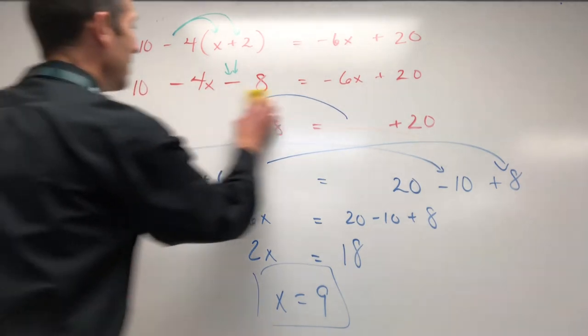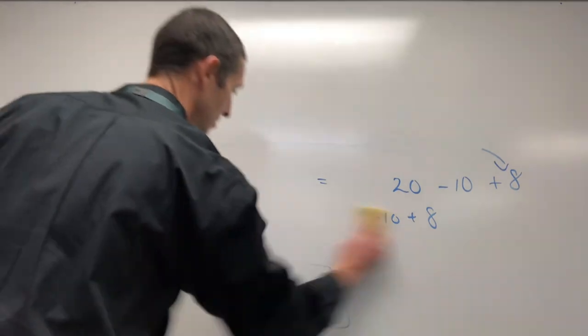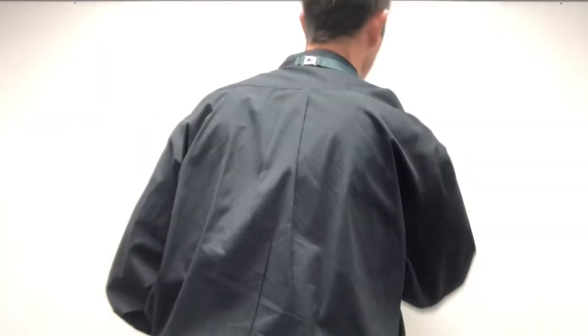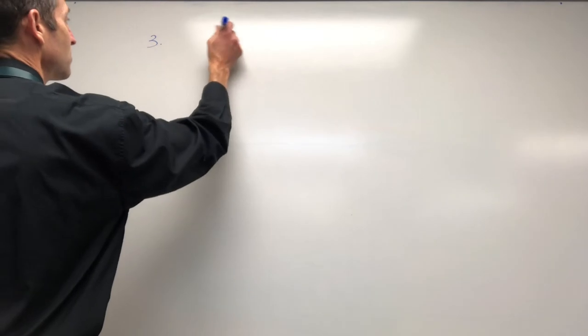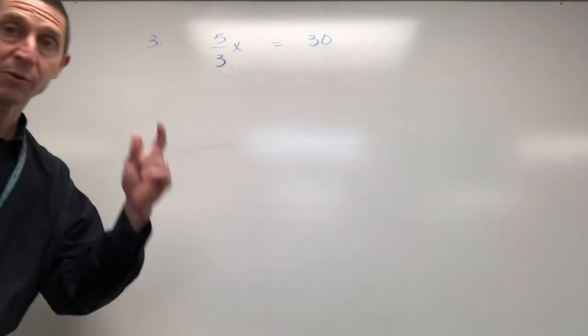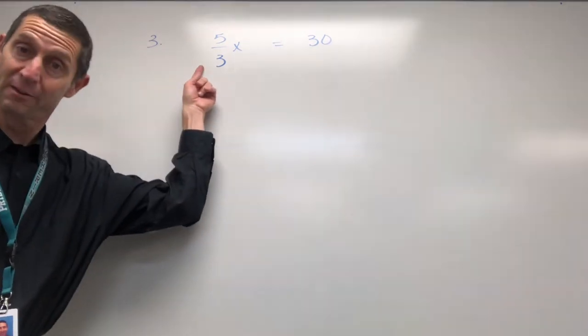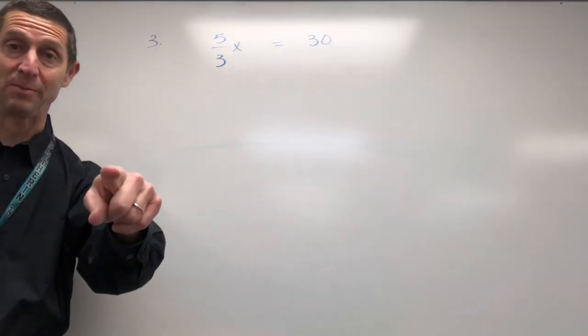Okay, let's do one with fractions in there. Let's do some fractions. Number 3. What do we got here? A 5 thirds x equals 30. Okay, so for us, we don't like that 5 thirds. If we could get rid of the 5 over 3, we'd be in business.